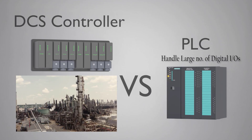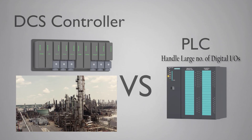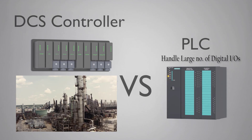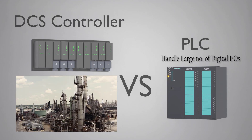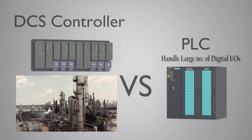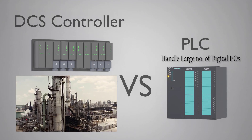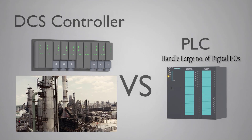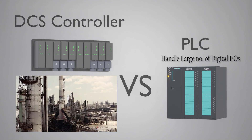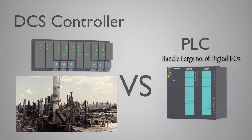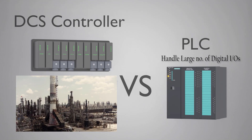DCS is a computerized control system that helps you control a large number of analog loops that exist in many big process plants like oil and gas, fertilizer, petrochemical, etc.